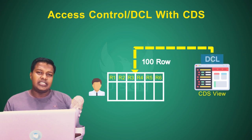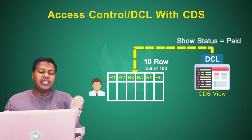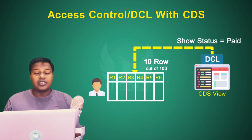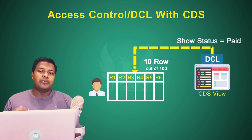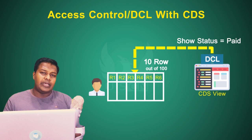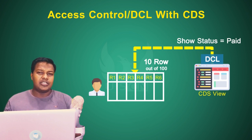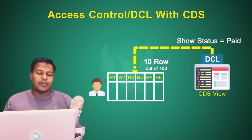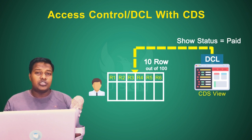What if we are required to restrict data to certain users — where certain users can only see data of a certain nature? For example, if you have a sales order, a user can only see sales orders with status 'delivered' or 'paid', or based on data values, only specific records are visible to that user.